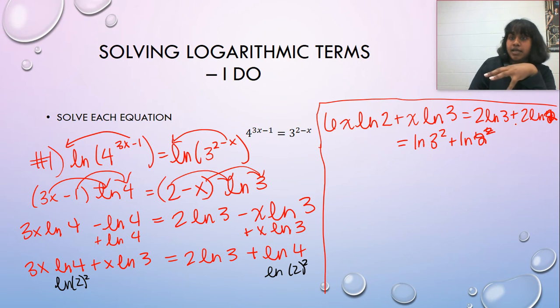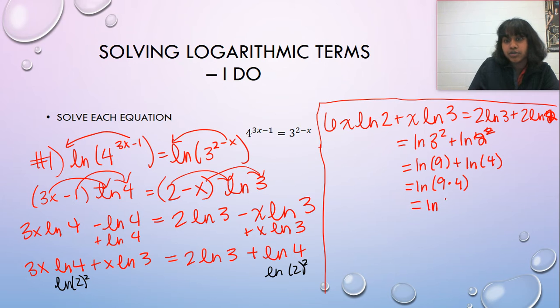And I know we just undid that, but there's a reason I'm bringing it back together. If I don't have coefficients, it makes putting these two together so much easier. The natural log of 9 plus the natural log of 4 becomes the natural log of 9 times 4, which is the natural log of 36, which can be written as the natural log of 6 squared, which can be written as 2 natural log of 6.